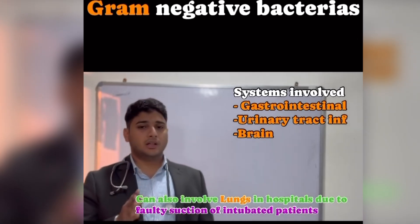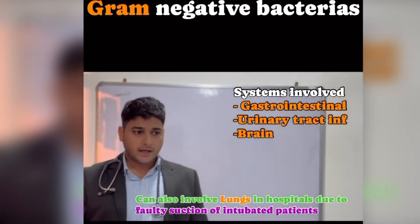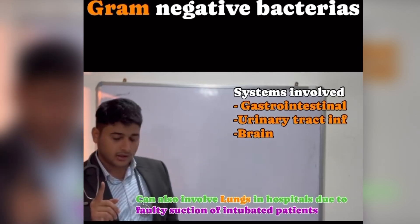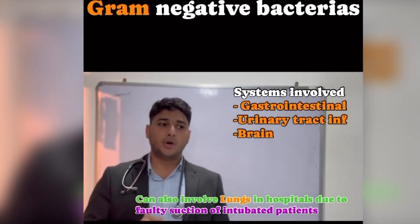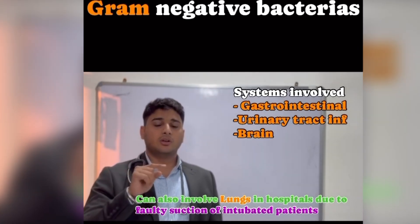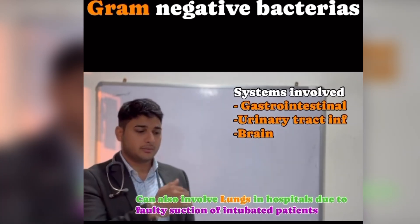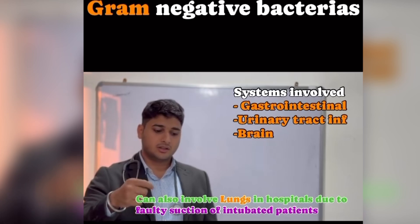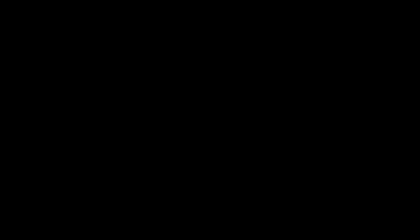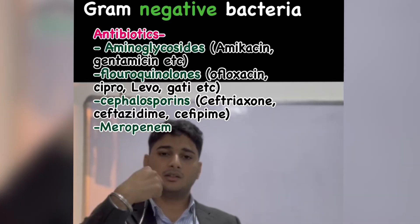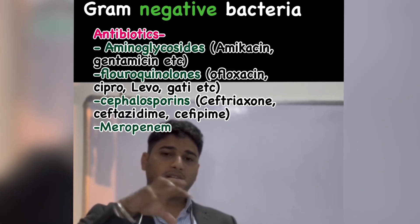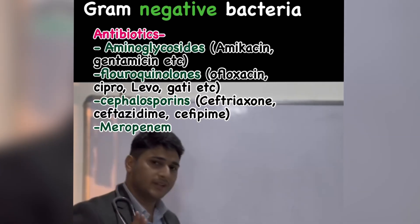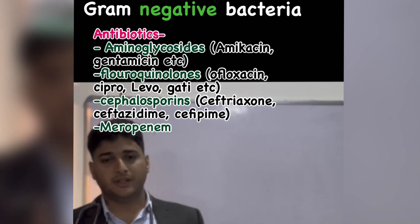Gram-negative sepsis is very severe. Gram-negative infections can also involve the lungs through hospital-acquired infections. For example, when a patient is on a ventilator and being suctioned, if the suction catheter touches contaminated surfaces and is then used for suctioning, those bacteria will infect the lungs as well. These infections are very severe and can be lethal.